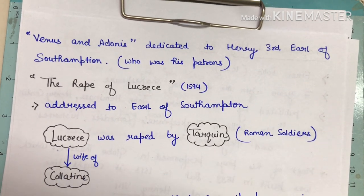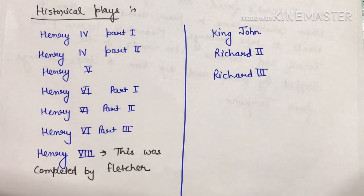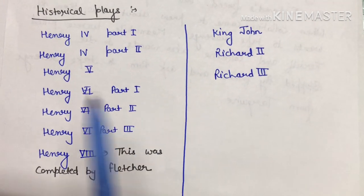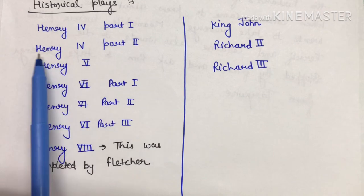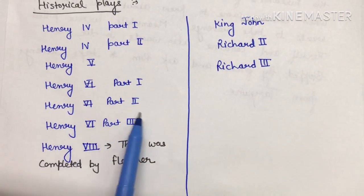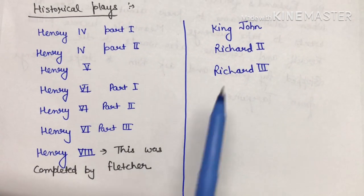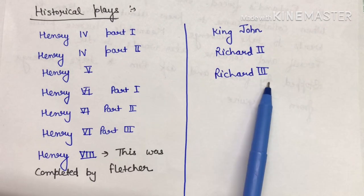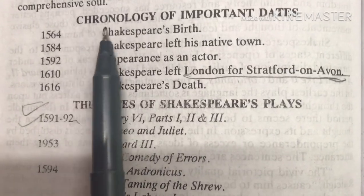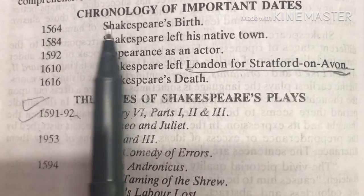The historical plays are: Henry 4 Part 1, Henry 4 Part 2, Henry 5, Henry 6 Part 1, Henry 6 Part 2, Henry 6 Part 3, Henry 8 (completed by Fletcher), King John, Richard 2, and Richard 3.